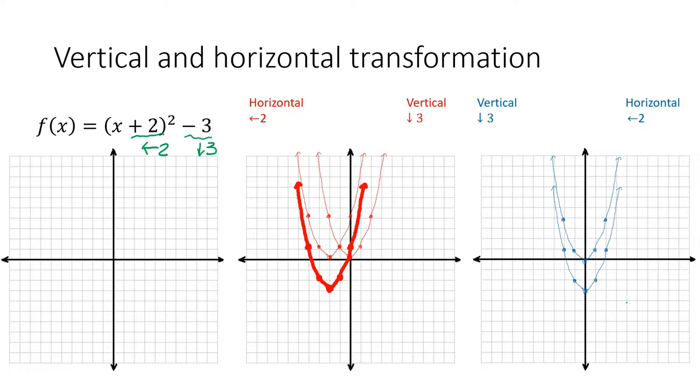Backwards, down 3, and then left 2. What do you notice? They are the exact same thing. Now, let's see the correct graph, which is that one. And they are all correct.